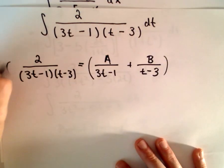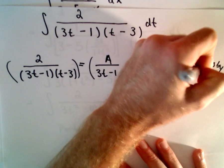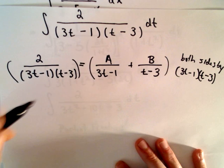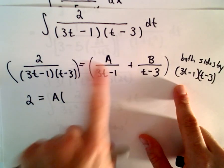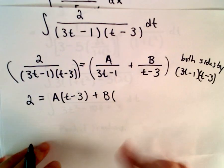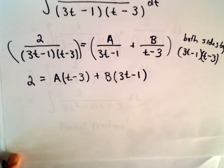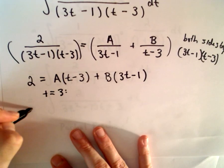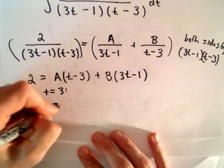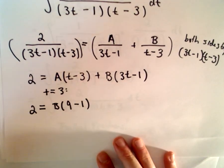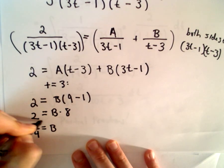Multiplying both sides by (3t minus 1)(t minus 3): on the left side we're just left with 2 in the numerator. On the right side, the 3t minus 1 cancels giving a times (t minus 3), plus b times (3t minus 1) after the t minus 3 cancels. All we're trying to do is determine a and b. If we let t equal 3, we get 2 equals a times 0 plus b times 8, so dividing both sides by 8 gives b equals 1/4.